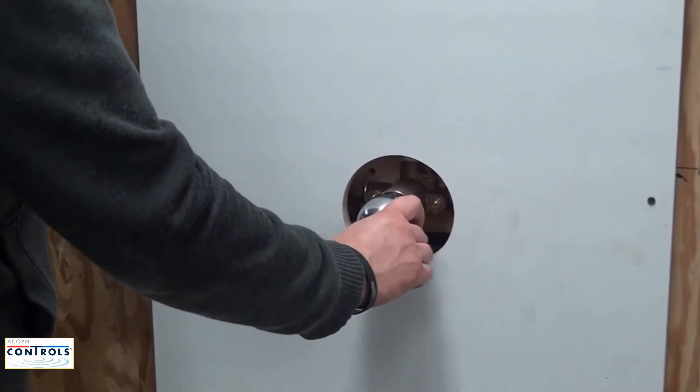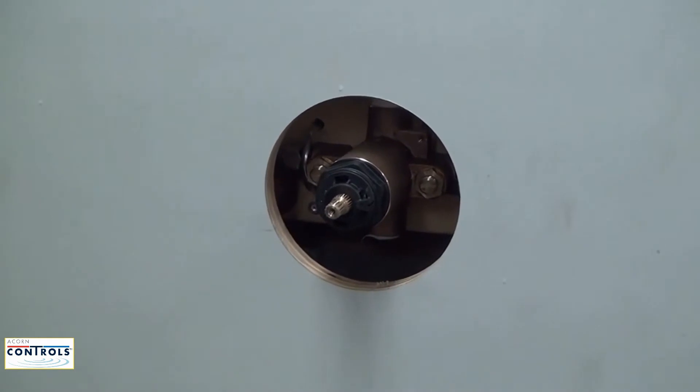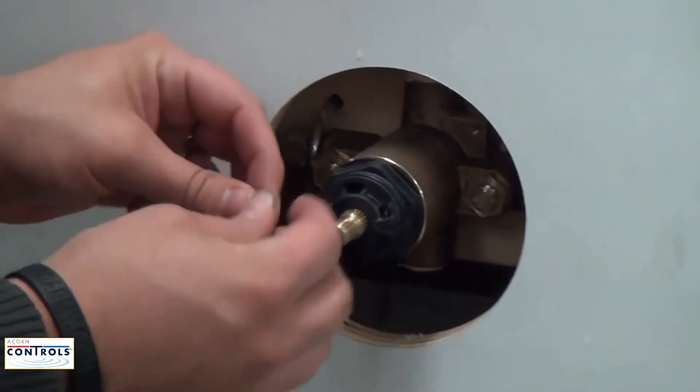By doing this, it primes the stem and makes it easy for the snap ring to be installed. Remove the handle and apply your off stop.